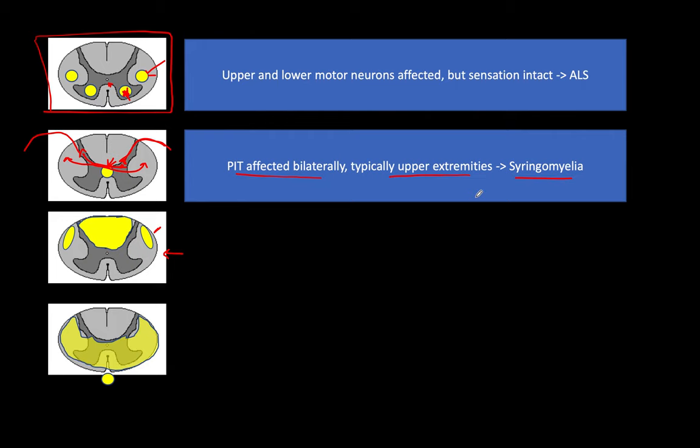Syringomyelias tend to happen in the cervical region — look for the upper extremities to be affected. The classic presentation is a patient who has been burning themselves on their fingers while cooking or working in the shop without realizing it. Check both hands — if they have bilateral loss of pain, itch, and temperature, it has to be syringomyelia, because no other system crosses at that level.